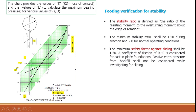The final check is against sliding. The minimum safety factor against sliding shall be 1.5. A coefficient of friction of 0.4 may be used for cast-in-place foundations when computing the frictional force. Passive earth pressures from backfill are normally not considered when investigating sliding. That concludes this presentation.